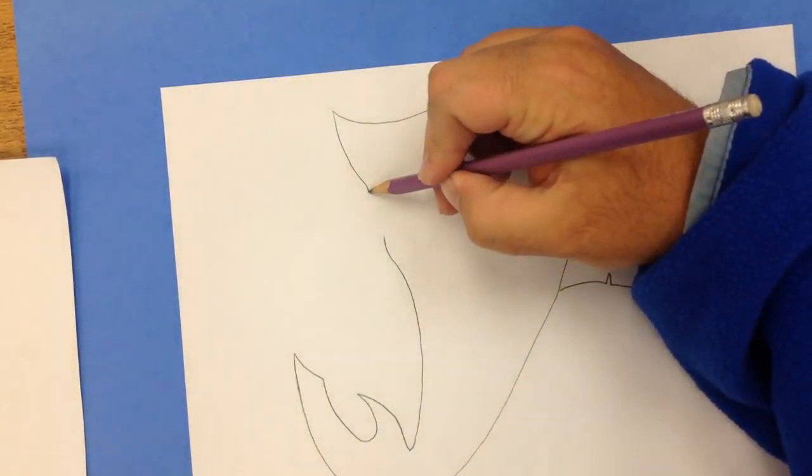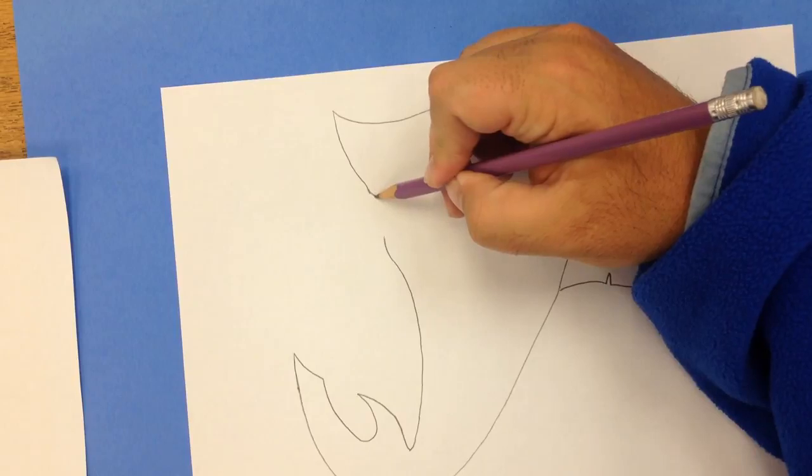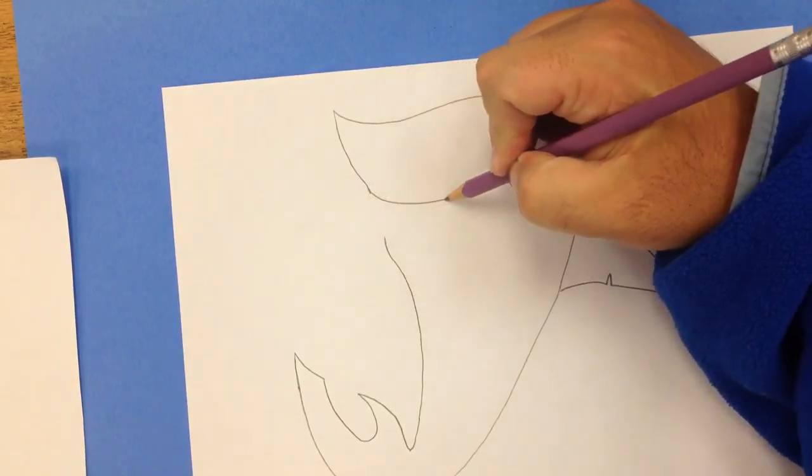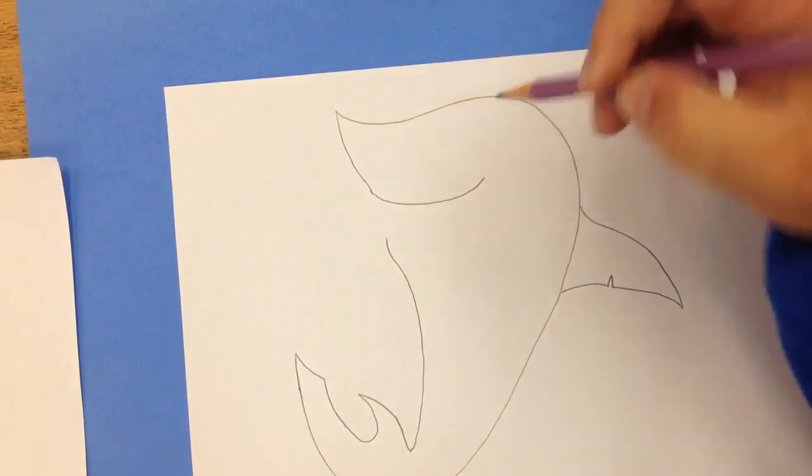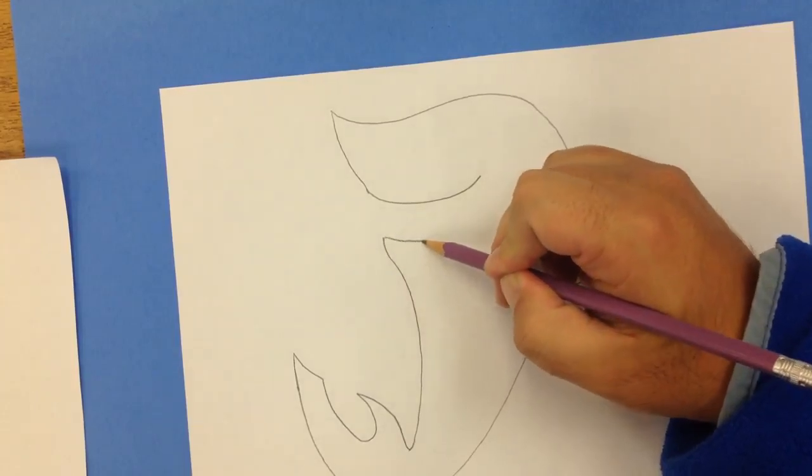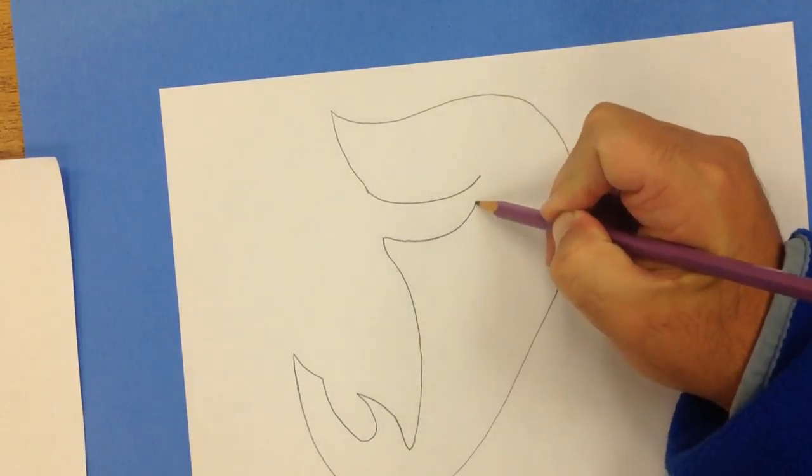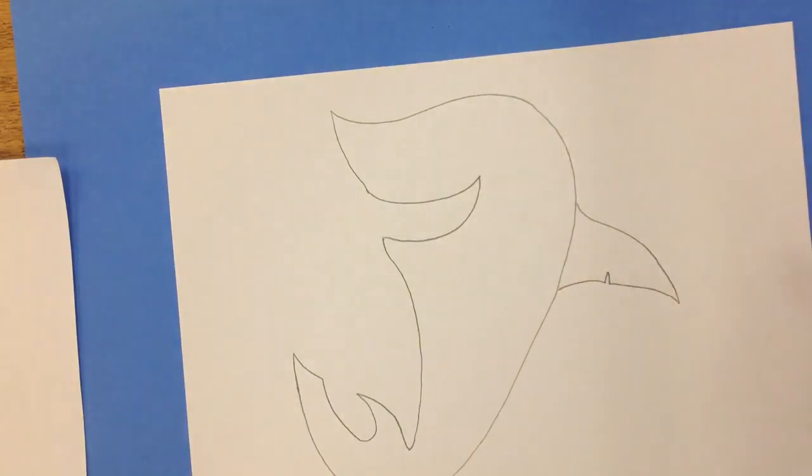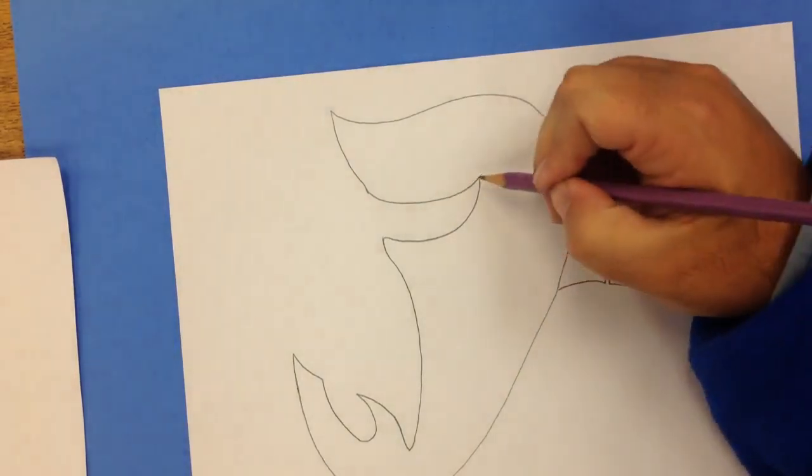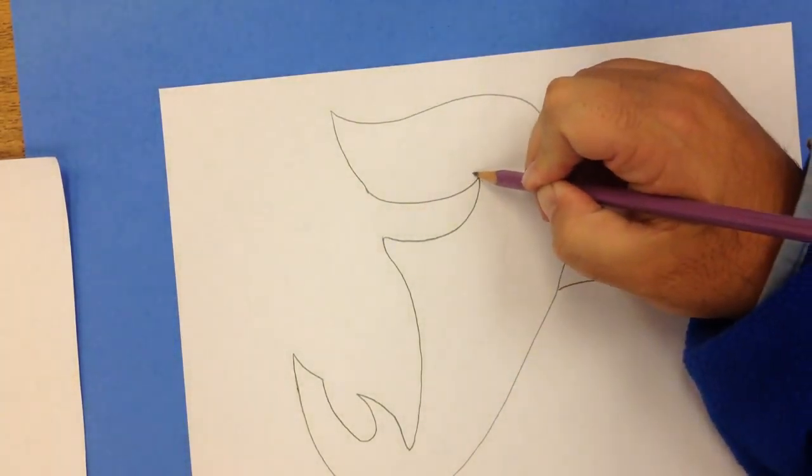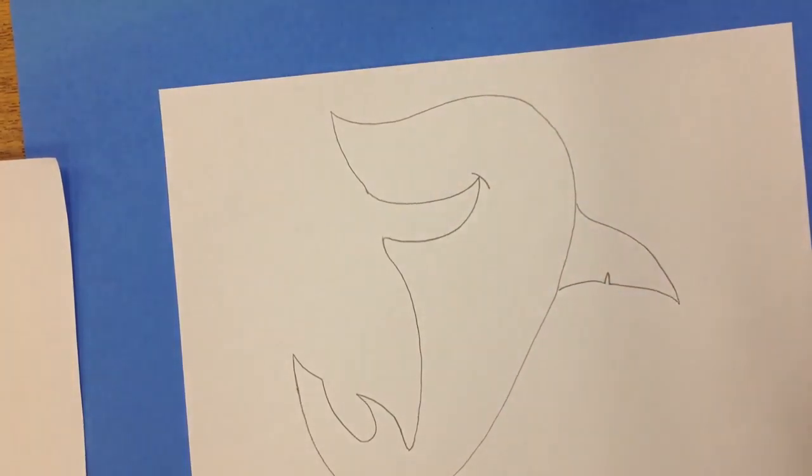From there, I'm going to come back up to the space that I left for the mouth. I'm going to draw one curved line that comes up like this, and then another one underneath. So we have a nice big smile that's going to be full of sharp teeth. One line there like that.